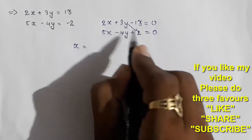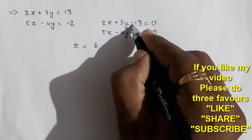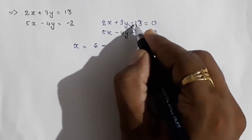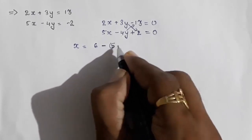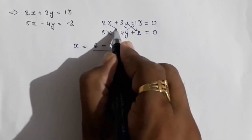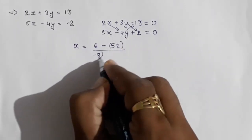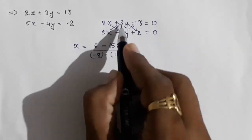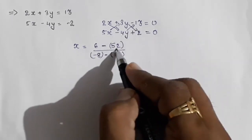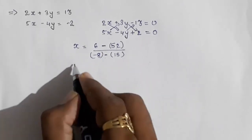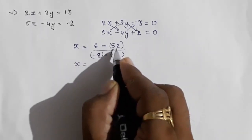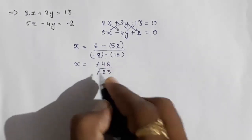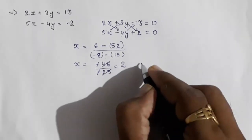To find x directly: multiply 3 × 2 = 6, then subtract the cross product: (-4) × (-13) = 52, so the numerator is 6 - 52 = -46. For the denominator, multiply across: the result is -8 - (-15) = -23. So x = -46 / -23, the negatives cancel and you get x = 2.